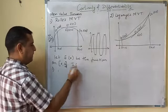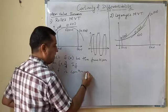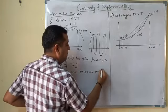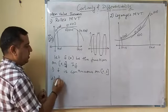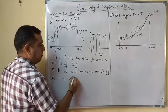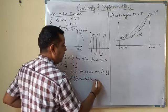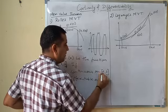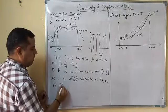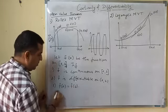If f is continuous on closed interval [a,b]. Second, f is differentiable on open interval (a,b). Third, f(a) is equal to f(b).